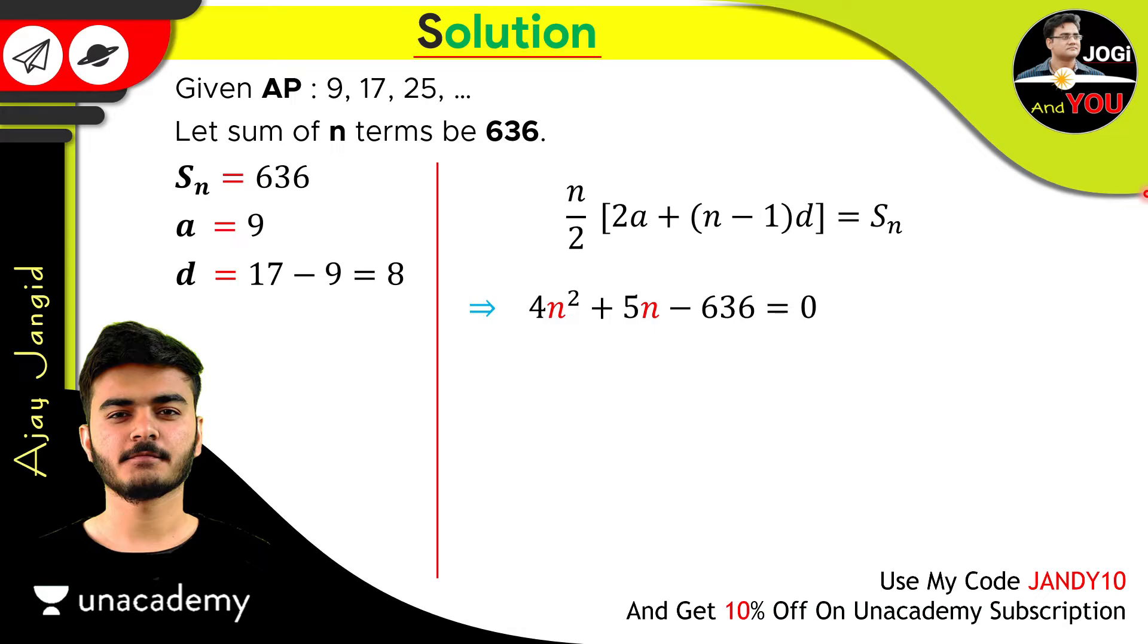And for solving quadratic equation, you just need to have a quadratic formula. And for quadratic formula, we want a, b, and c. These are the coefficients. And what are a, b, c? a is equal to 4, b is equal to 5, and c is equal to minus 636. So, just use quadratic formula here and replace all these values in it.